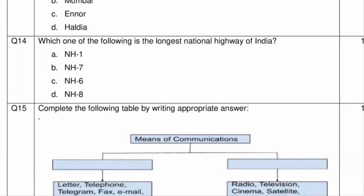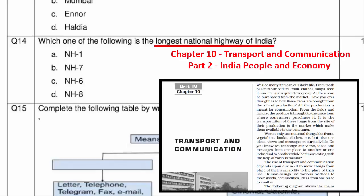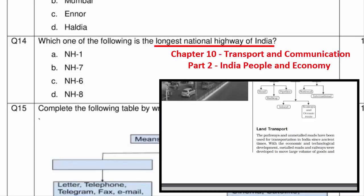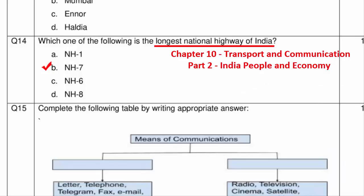Question 14 asks which is the longest national highway of India. This is from Chapter 10 Transport and Communication, Part 2 book, under the sub-topic National Highway. The answer is Option B — National Highway 7, presently called National Highway 44 — which is the longest national highway in India, starting from Srinagar in the north and ending in Kanyakumari in the south.